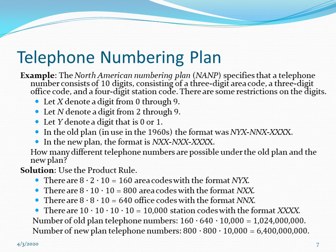There are two different plans. The old plan, used in the early 1960s, has the format NYX for the area code, NNX for the office code, and XXXX for the station code. The new plan has the format NXX for the area code, NXX for the office code, and XXXX for the station code. We want to know how many different telephone numbers are possible under each plan.